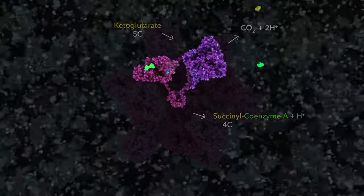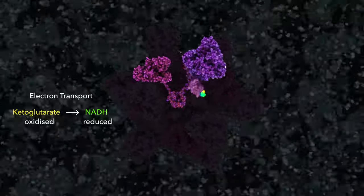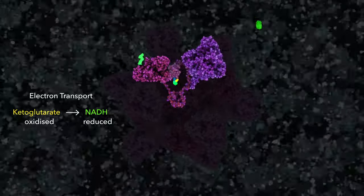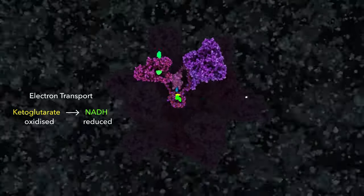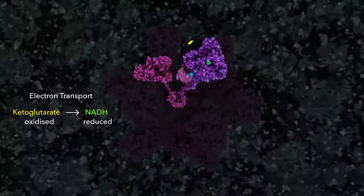The electron from ketoglutarate oxidation is retained by the tethered enzyme, before passing it to coenzyme NADH, which delivers electrons to the electron transport chain.